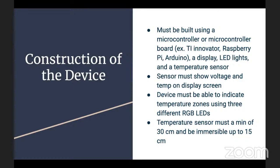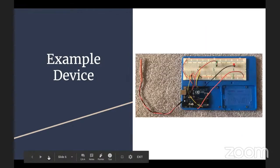Construction of the device: It must be built using a microcontroller or microcontroller board - examples include TI Innovator, Raspberry Pi, or Arduino - a display, LED lights, and a temperature sensor. The sensor must show the voltage and temperature on the display screen. The device must be able to indicate temperature zones using three different RGB LEDs. The temperature sensor must be a minimum of 30 centimeters long and immersible up to 15 centimeters, and it must be able to fit in a three centimeter hole.